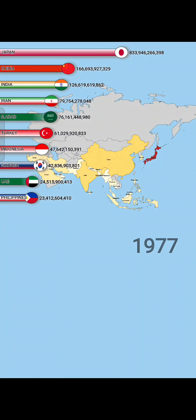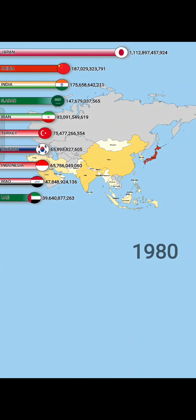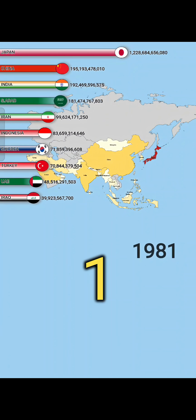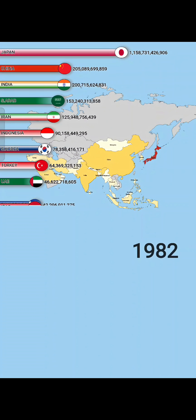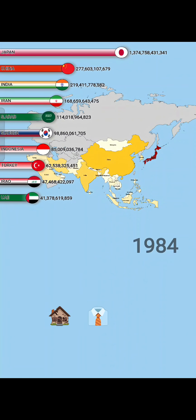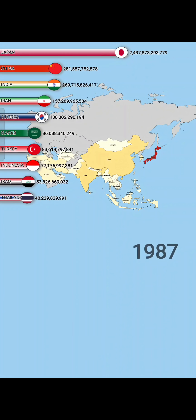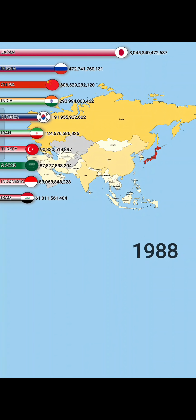There are three main ways to calculate GDP. Number one, the expenditure method adds up all spending by households, businesses, and the government, plus exports, minus imports.